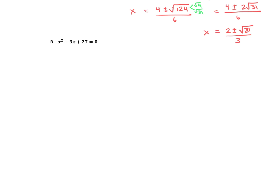Let's try one more example — this gets faster the more we do it. One thing I didn't mention: if you're going to use the quadratic formula, you need to be in standard form and set equal to zero. If your equation is not equal to zero, get everything on one side first, and then start with the quadratic formula. So identify a, b, and c: a is 1, b is negative 9, c is 27.